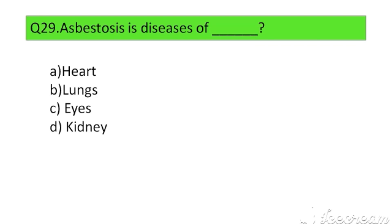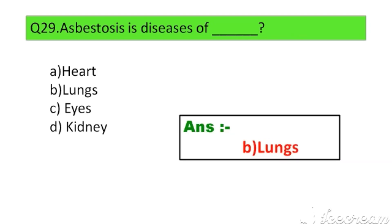Question number 29. Asbestosis is a disease of: Option A. Heart, B. Lungs, C. Eyes, D. Kidney. The right answer is Option B: Lungs.